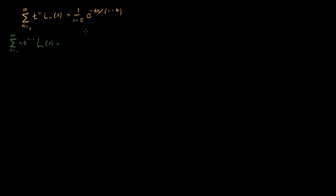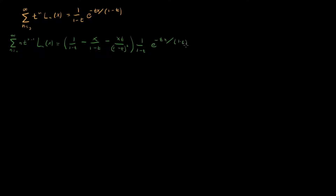The right-hand side is actually quite a bit of work, so I won't do it here, but if you work through it, what you find is that it equals 1 over (1 minus t) minus x over (1 minus t) minus xt over (1 minus t) squared, all times 1 over (1 minus t) times e to the minus tx over (1 minus t). So that was a bit ugly, but we have it.